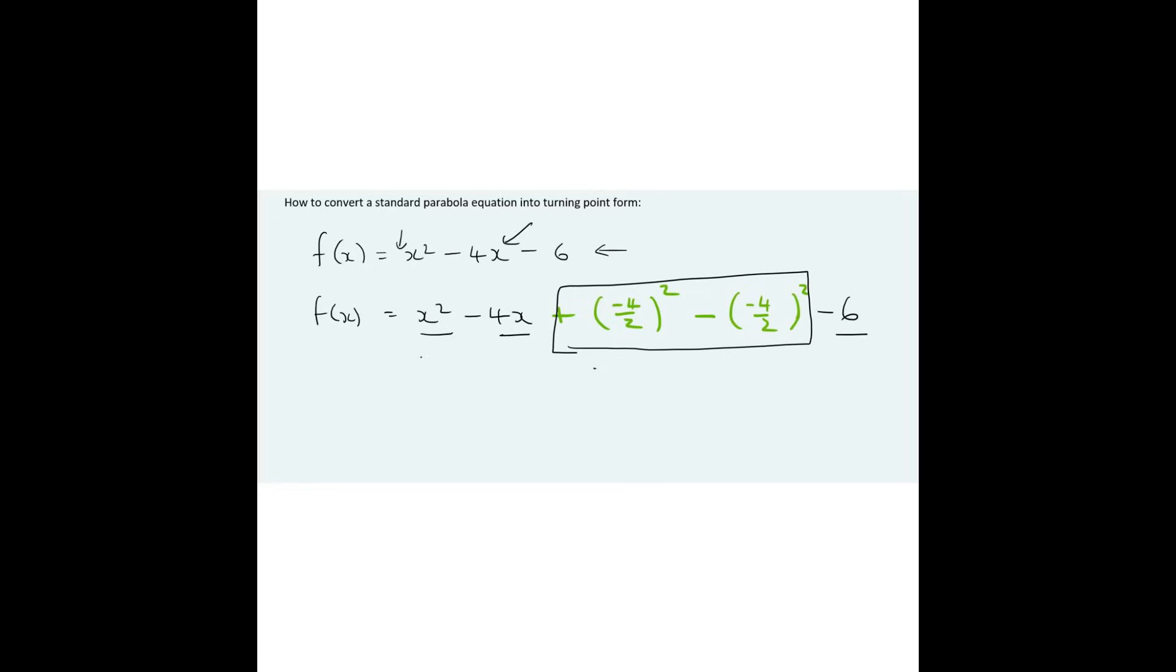So that is what we've added. We added half of this number, and then we squared it, and then we just minused the same thing. Now going into the next line, we take these three parts over here, and they're going to go into one bracket.